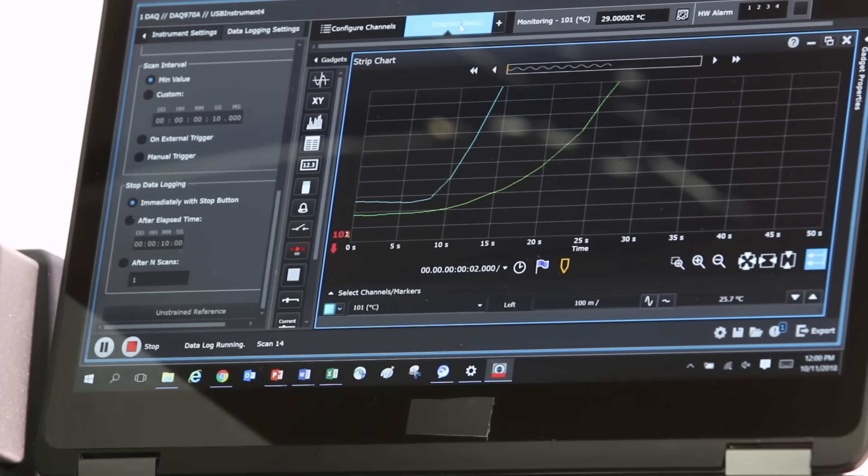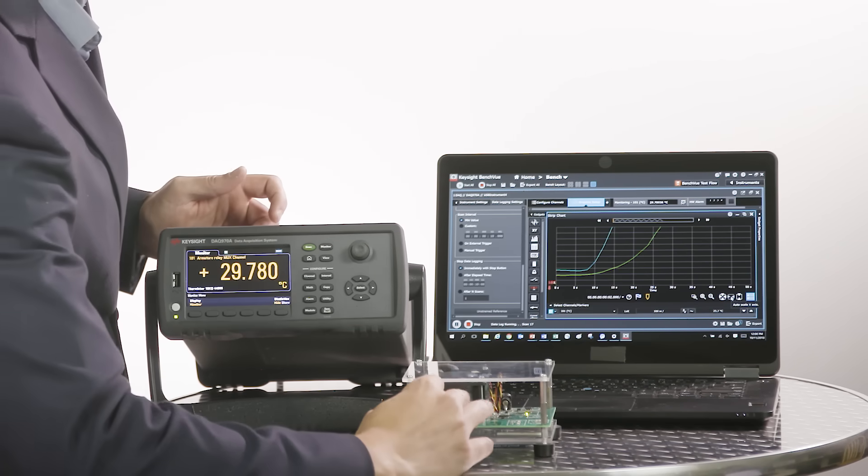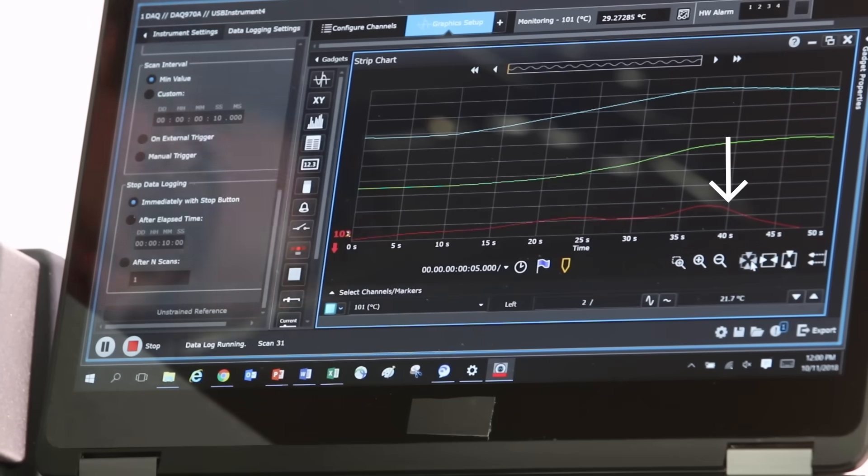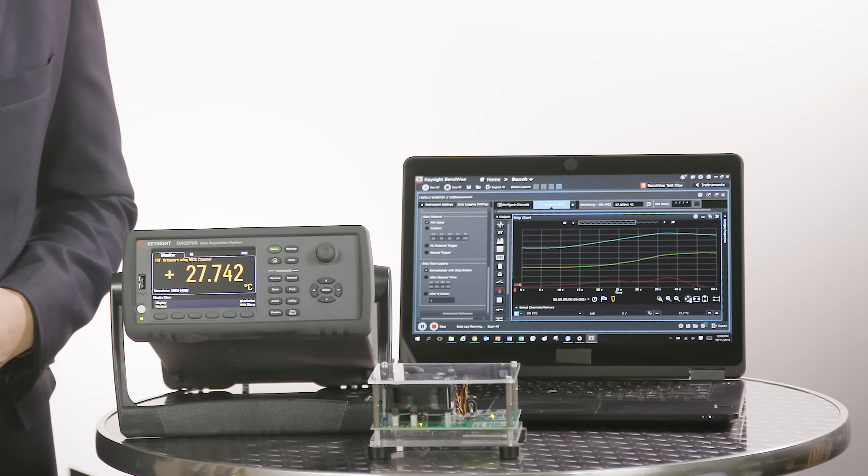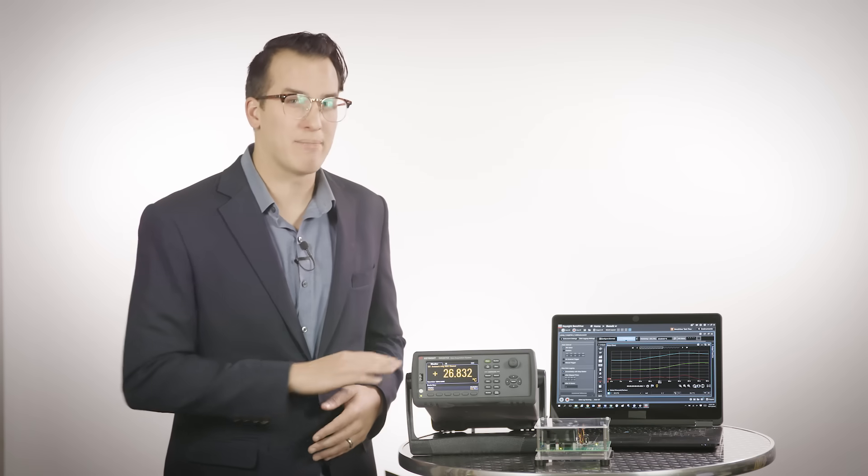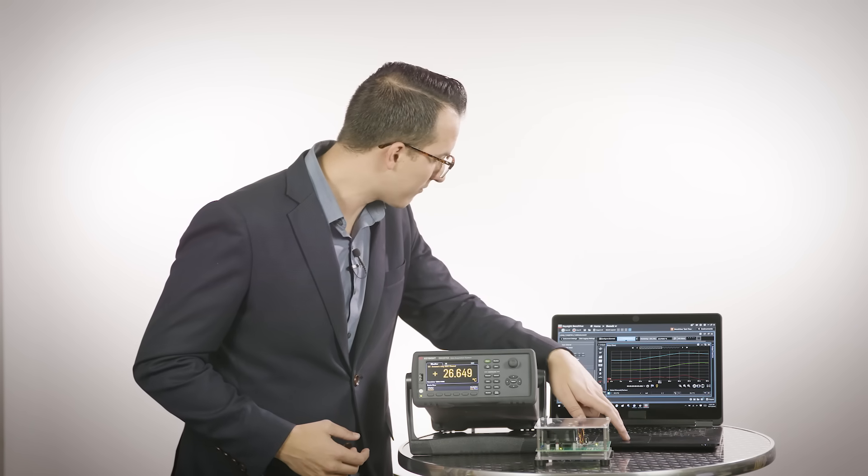Since our graph has gone off screen I'm gonna go ahead and auto scale in BenchVue and I'm gonna turn on my system's fan and we should now see the temperature start to drop. You can see the fan's had a pretty big impact on our temperature so for today's purposes that is plenty of information for us.